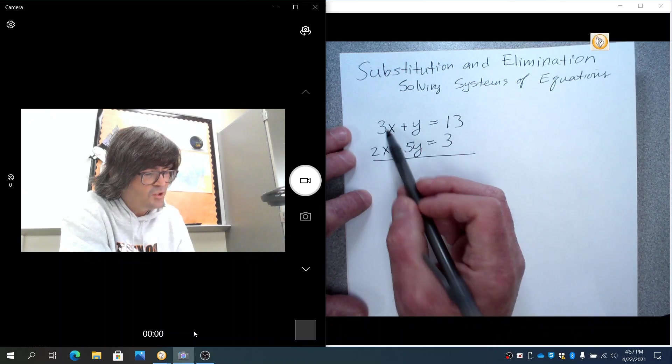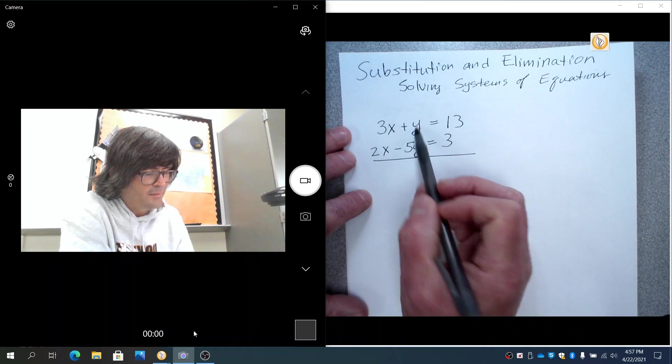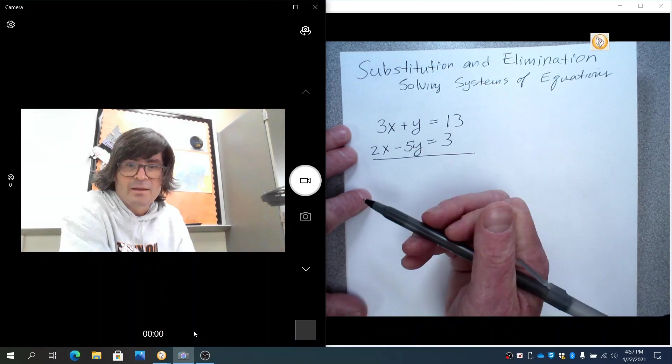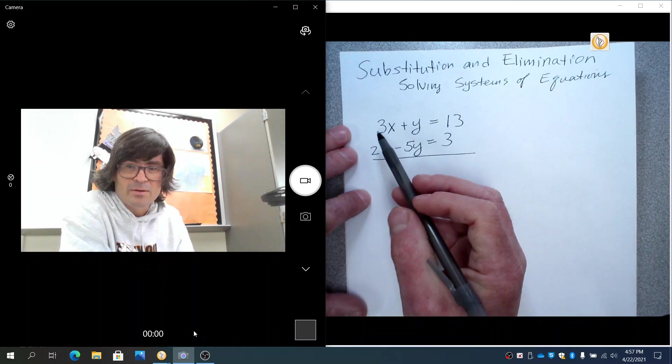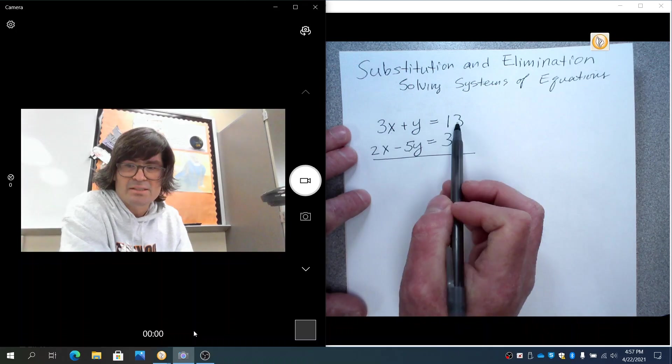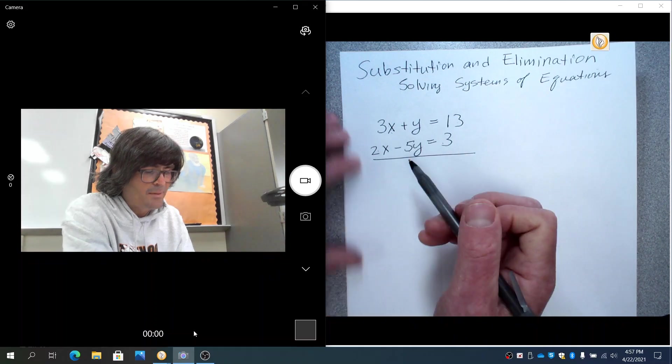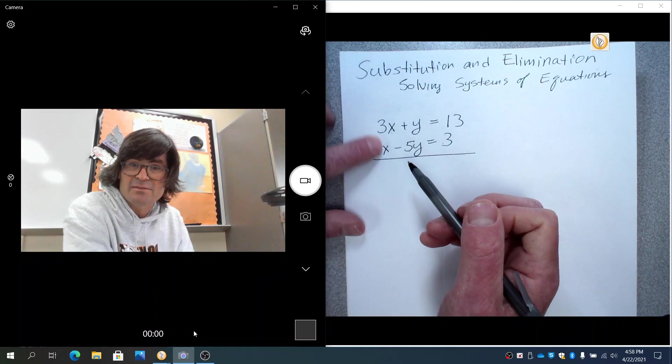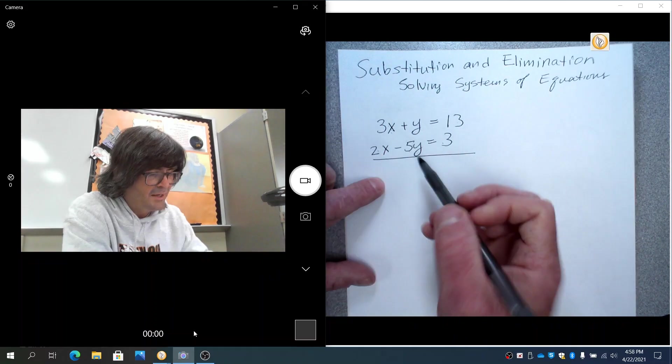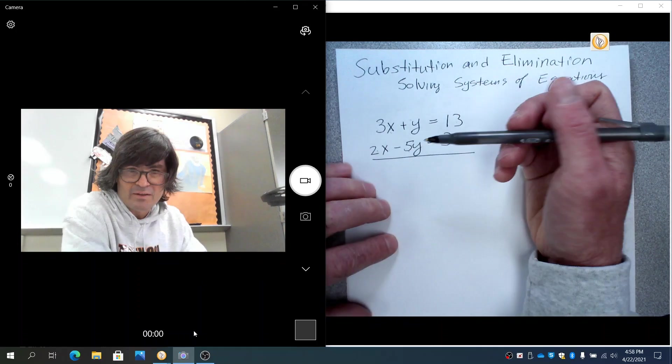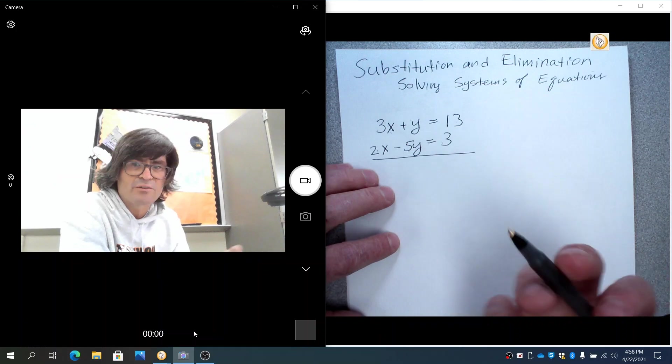So I'm looking at the 3 and the 2 and the 1y and the negative 5y, and you can pick either variable you want. And I'm going to pick a number to multiply everything on this top by and everything on this bottom by so that maybe the x's are like 6 and negative 6, or the y's are perhaps 5y and negative 5y. You can do it with either variable. I'm going to do it with the x's first.